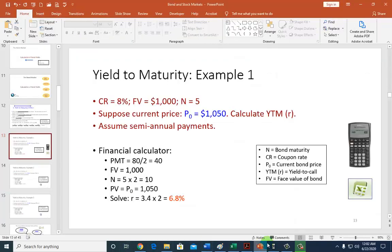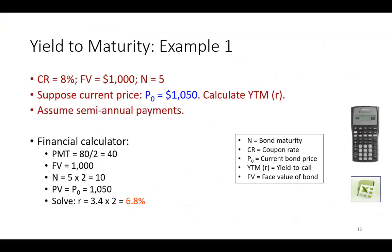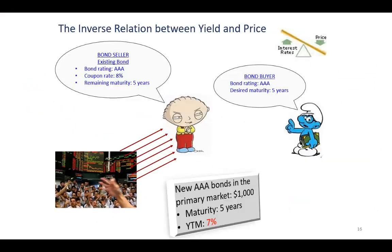Continuing in this presentation, this takes us to the interesting concept of the inverse relationship between the yield to maturity on a bond and the price of the bond. This illustration shows: when interest rates go up, the price of bonds goes down. And if interest rates go down, the price of the bond will go up. That's the seesaw that you find yourself in.